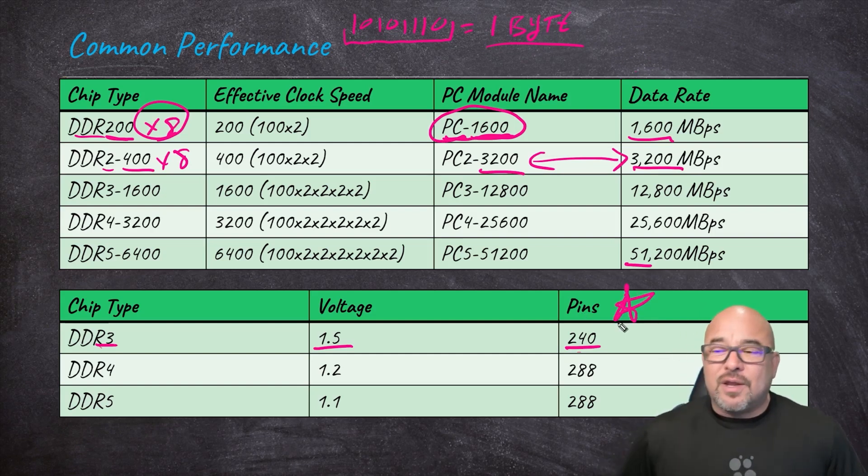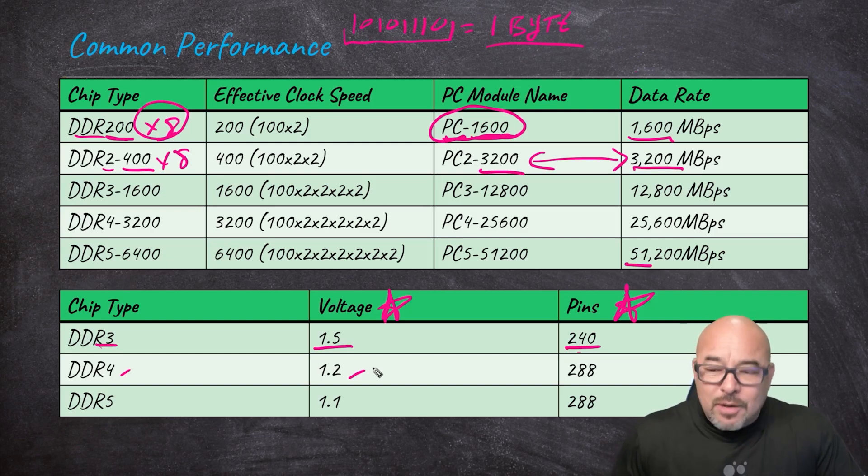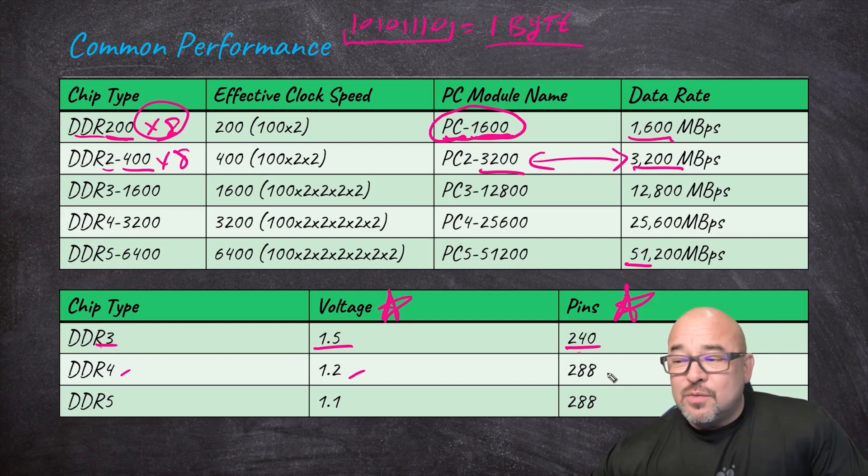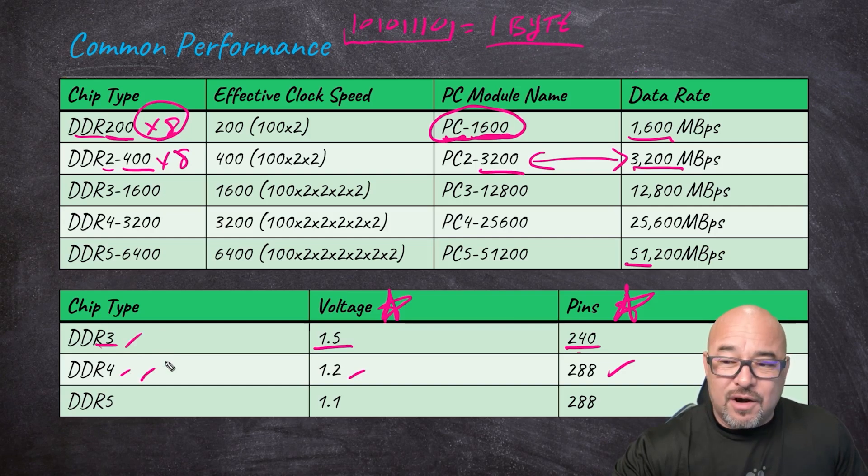DDR4 would give us 1.2 volts. By the way, we go down and down in the number of voltage, that's only because of advances in technology and the ability to keep the memory refreshed. Remember it has registers that have to be refreshed in order to keep the data in there. Used to be we would need more voltage on older chips, we'd have to have five volts of power. Now they've just been able to whittle it down further and further. But these will use 288 pins. So the notch location in DDR3 is in a slightly different place than in DDR4, which actually uses two notches.